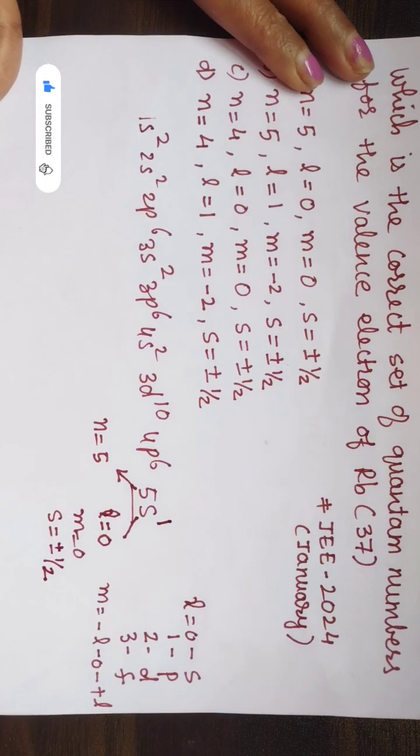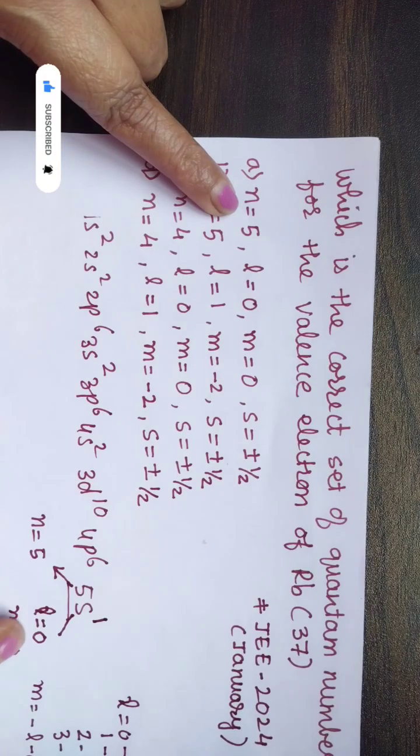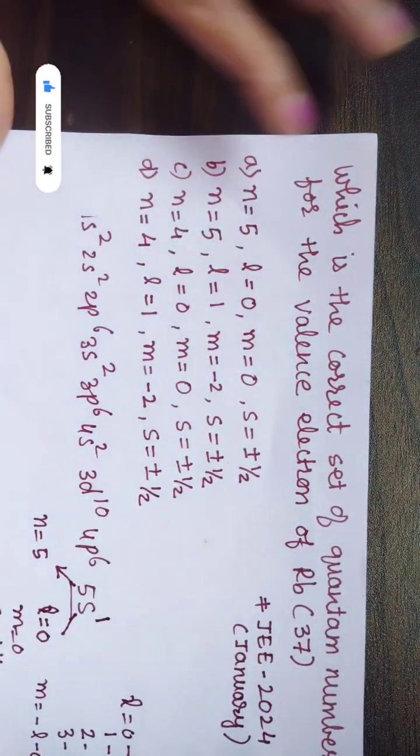So the answer is n is equal to 5, l is equal to 0, m is equal to 0, and s is equal to plus half. So here the answer is first option.